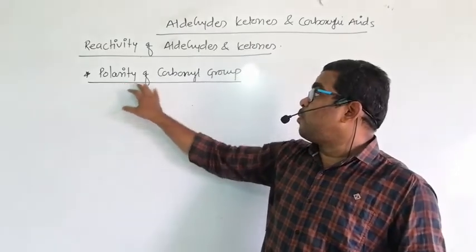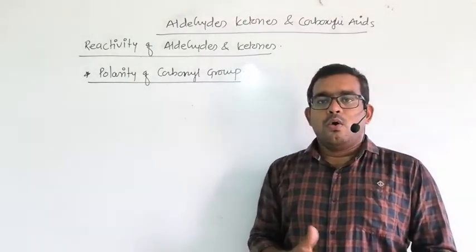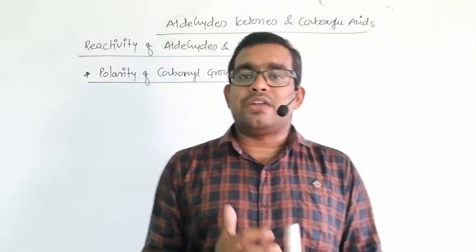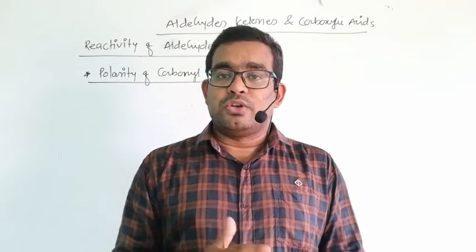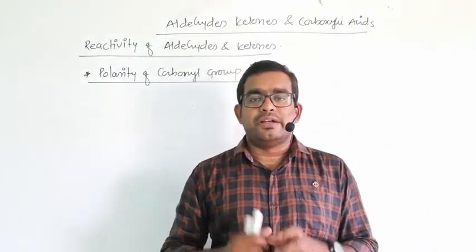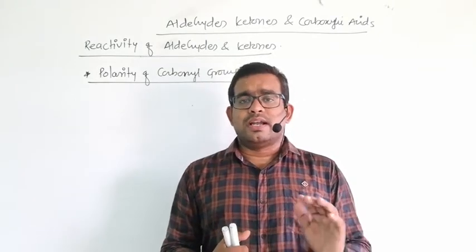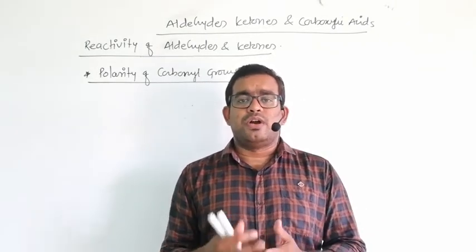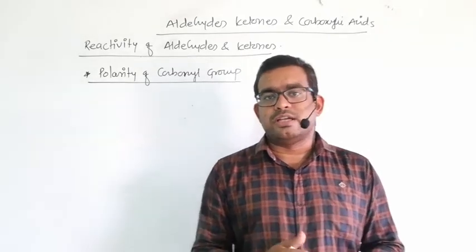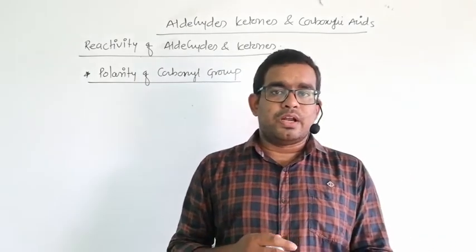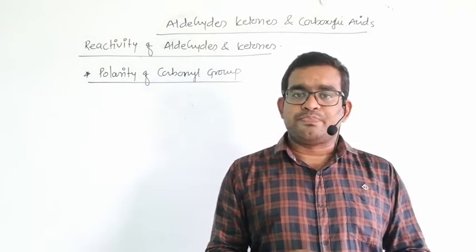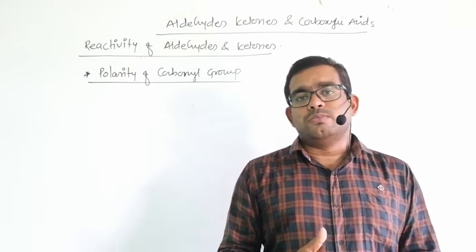In this topic, we will discuss the polarity of the carbonyl group. What is meant by polarity? Polarity is the charge acquired by a molecule. If the same molecule consists of both positive and negative charge, it is called a polar bond. There are two types of covalent bonds: non-polar, where polarity cannot arise, and polar, where the molecule consists of both positive and negative charge.